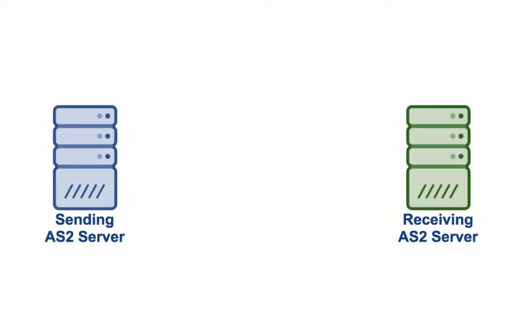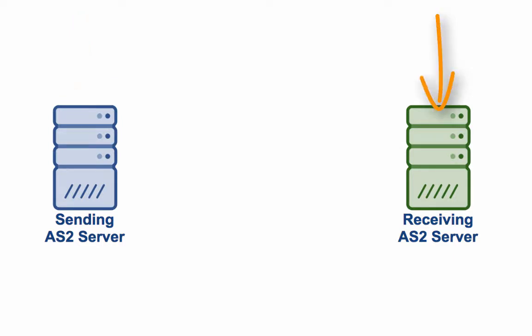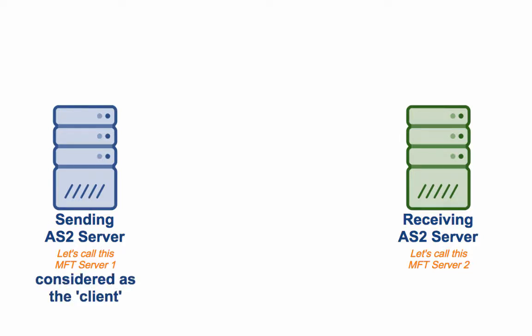First, let's cover a few prerequisites. This tutorial involves two AS2 servers. The first AS2 server acts as the sender, and the second AS2 server acts as the recipient. Let's call the first server MFT Server 1, and the second server MFT Server 2. MFT Server 1 can also be considered the client, and MFT Server 2 the server, in a client-server architecture.